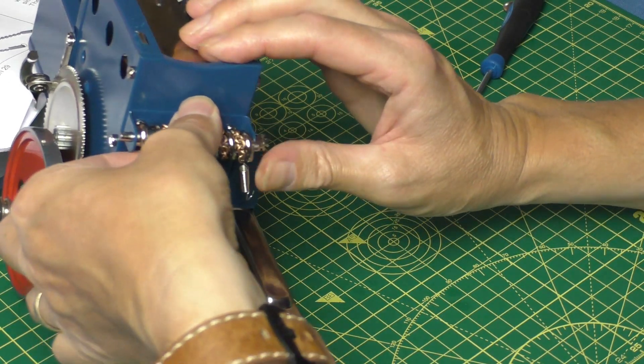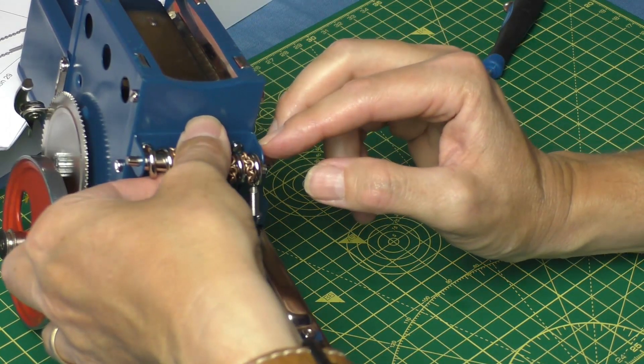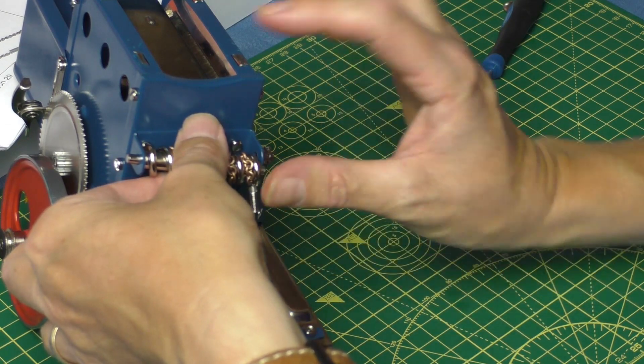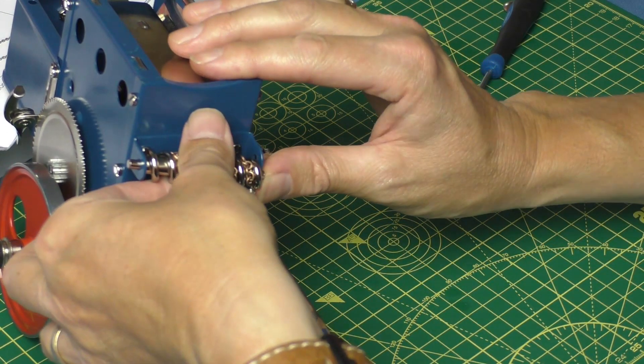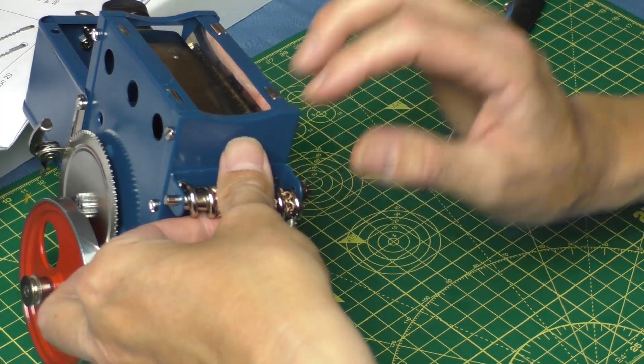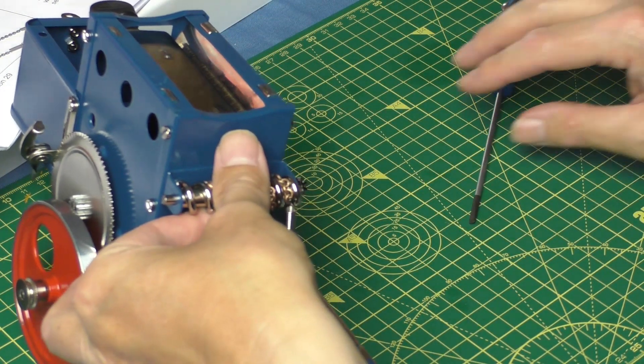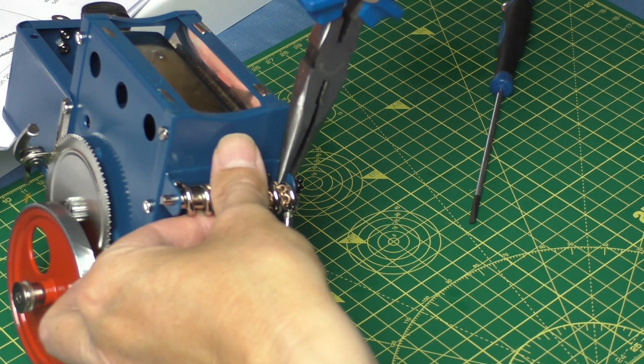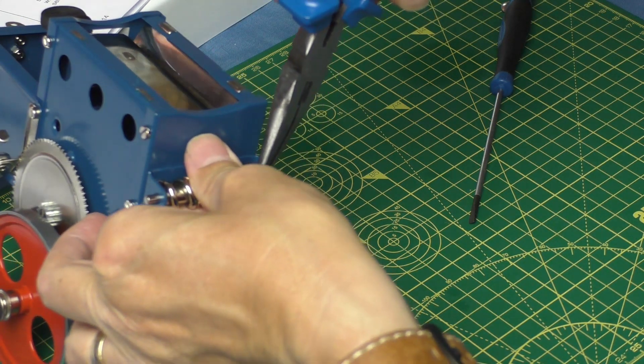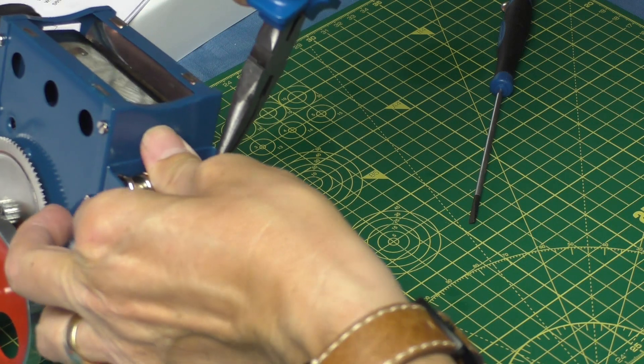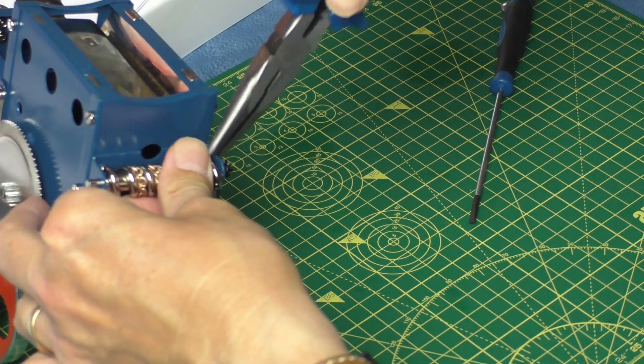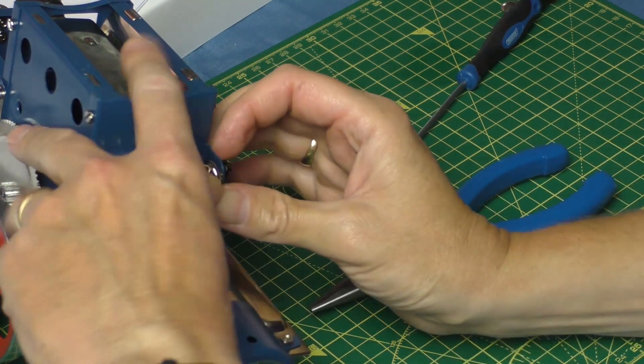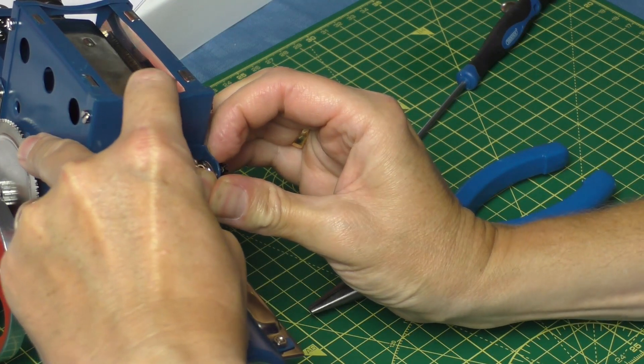And, well, the only way I'm going to get that in there is by forcing the bracket and bending the bracket, basically. There's no other way. Didn't really want to do that, but I'll just give it a little bit of a bend with the pliers. There's... snap.